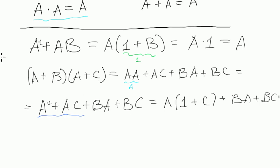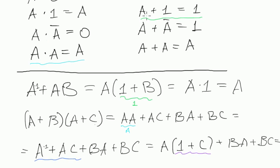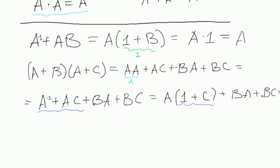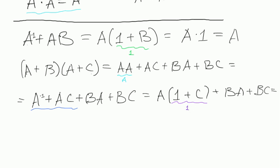As you can see, this particular one should look familiar to you. We did the same thing with this problem. We know that some variable plus 1 in Boolean algebra will always equal 1. So we know that this expression inside brackets is 1. So the whole thing will be A multiplied by 1, but that's A, plus BA plus BC.